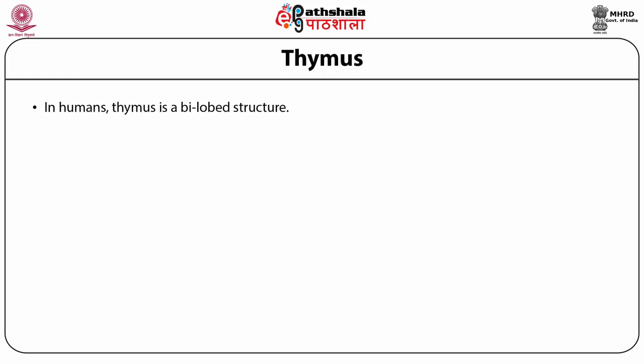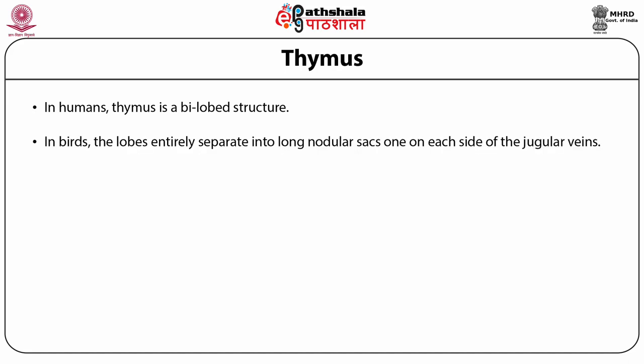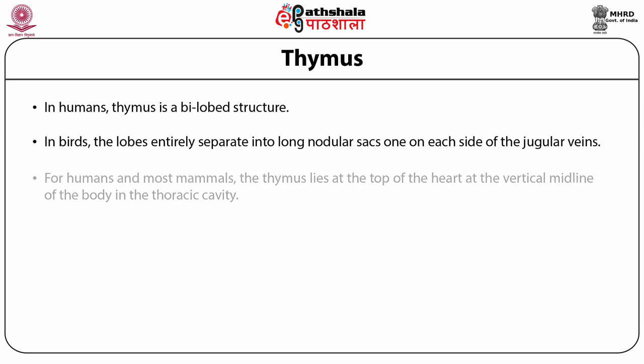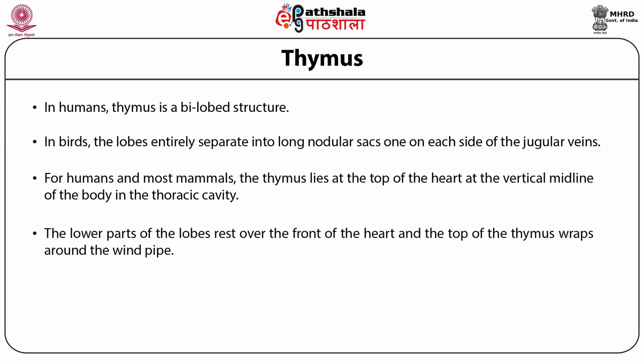In humans, the thymus is a bilobed structure. In birds, the lobes are entirely separate into long nodular sacs, one on each side of the jugular veins. For humans and most mammals, the thymus lies at the top of the heart at the vertical midline of the body in the thoracic cavity. The lower part of the lobes rests over the front of the heart and the top of the thymus wraps around the windpipe.